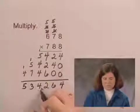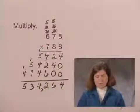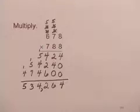I finish by writing a comma to separate the periods. And the product is 534,264.